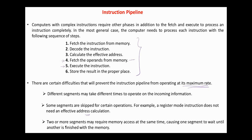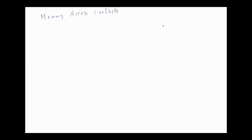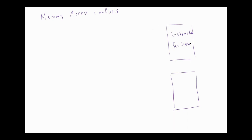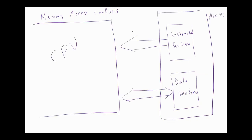Memory access conflicts are generally resolved by using two memory buses for accessing instructions and data in separate modules. Here we have the instruction bus and a separate data bus.